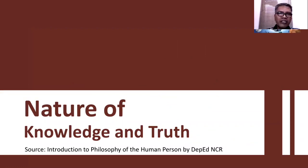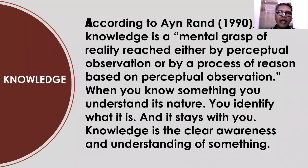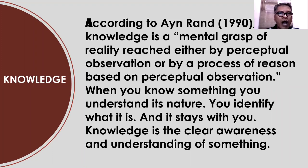So what is knowledge and what is truth? According to Ayn Rand in 1990, knowledge is a mental grasp of reality, either by perceptual observation or by a process of reason based on perceptual observation. Knowledge is being perceived first through our senses, through observation — we call it empiricism — before we can gain knowledge through the use of our rational faculty or by a process of reason. But it is based on perceptual observation also.